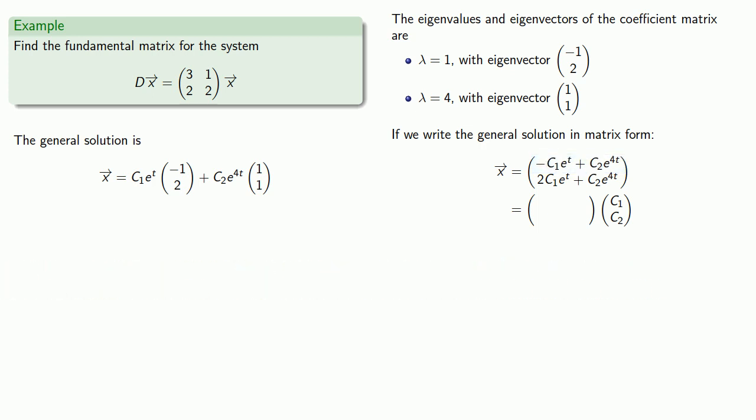Since we want to get minus C1e to the t plus C2e to the 4t, that means our first row must be minus e to the t, e to the 4t.